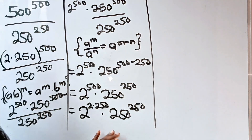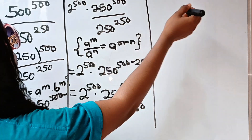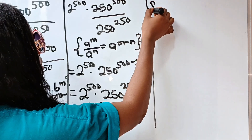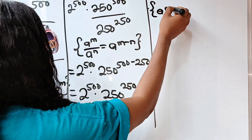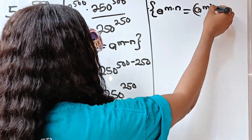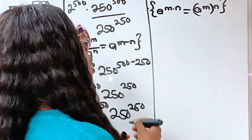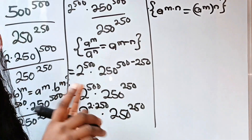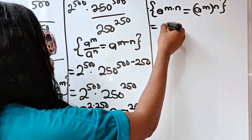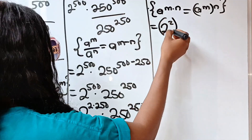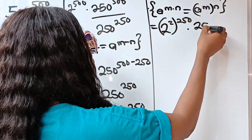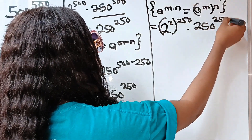Back to what we are solving. This is equal to — remember that a^(m×n) = (a^m)^n, and both forms can be exchanged. So we have 2^2 raised to the power of 250, multiplied by 250 raised to the power of 250.